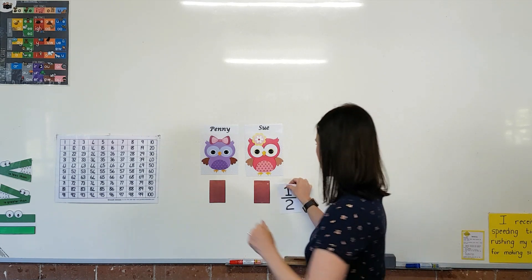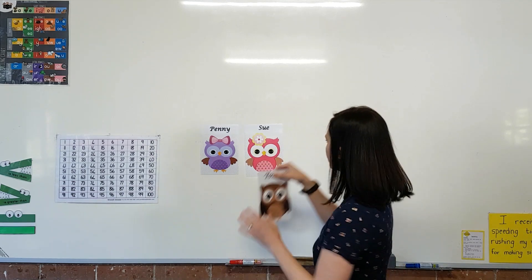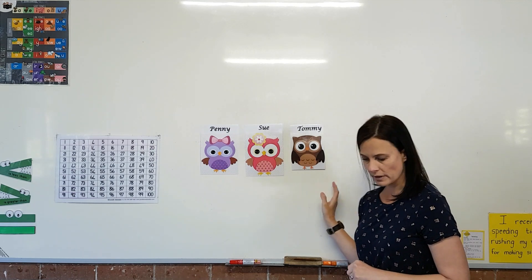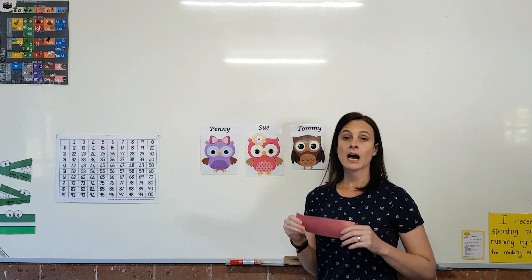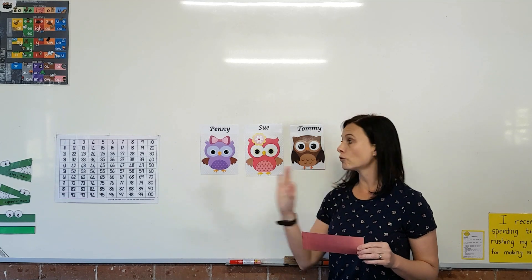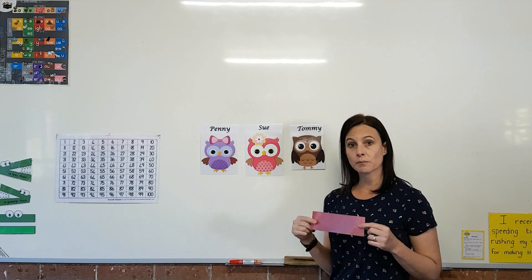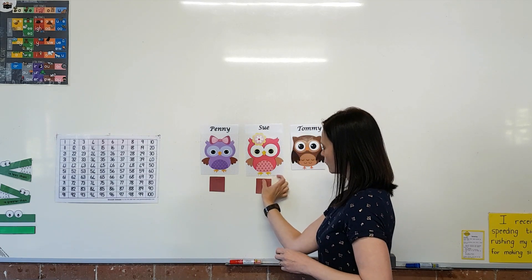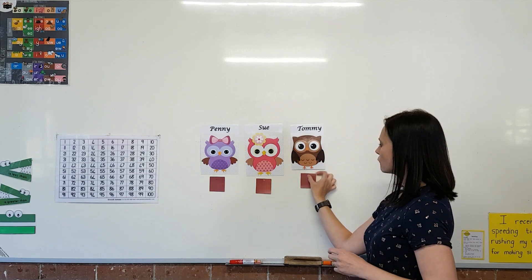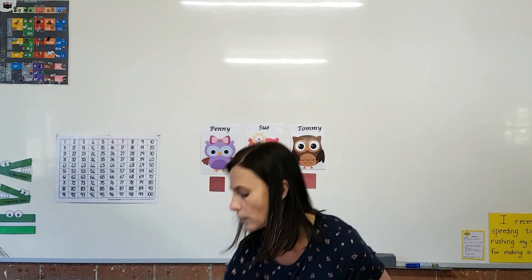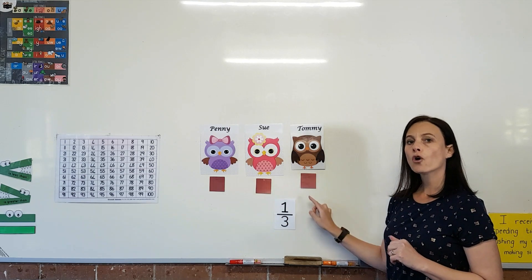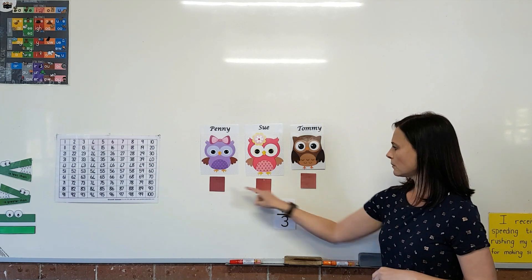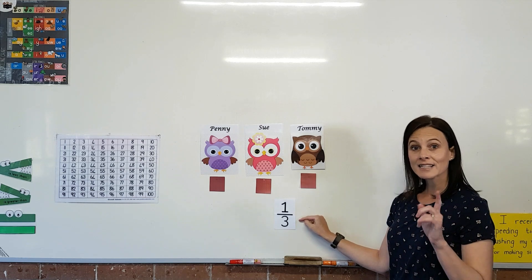Now let's give them another friend. This friend's name is Tommy. So we have Penny, Sue, and Tommy, but I only have one chocolate. I need to cut this chocolate bar into three equal pieces so that each friend can get a piece. I gave Penny a piece, I gave Sue a piece, and I gave Tommy a piece. The fraction for this one we call a third or one third. Each friend will get one piece of the three pieces of the chocolate.